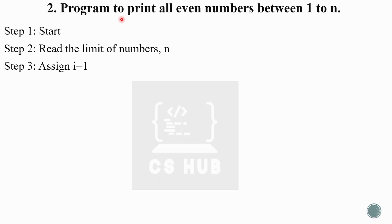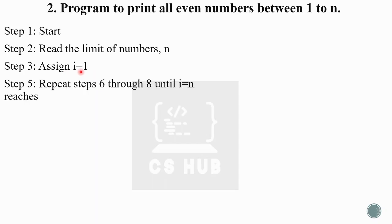Algorithm steps: First, read the limit n — up to which even numbers are to be printed. Then assign i equal to 1. We then enter a loop that runs from 1 to n. Inside the loop, check if i percentage 2 equals 0. If true, print i. Then increment i, and repeat.